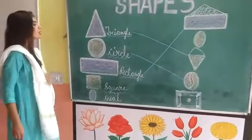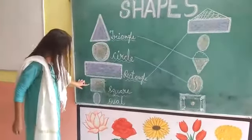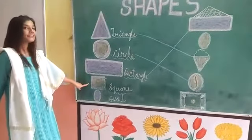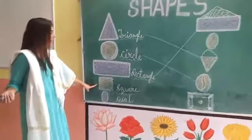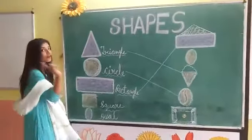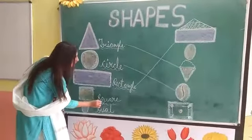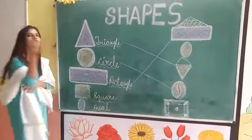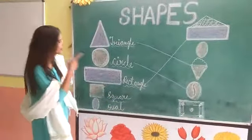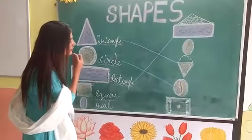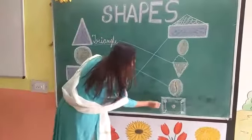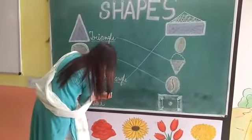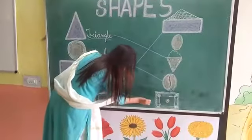Okay students, now come to this shape. Tell me which shape is this? This is a square. The spelling of square is S-Q-U-A-R-E. And which figure is similar to this square? Carrom board. Yes, carrom board is similar to this square. So let's match.